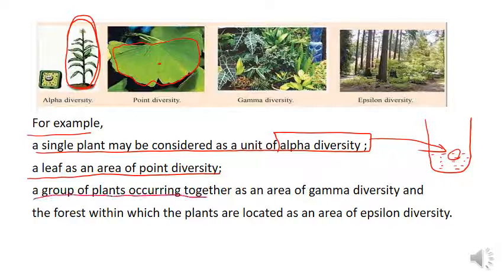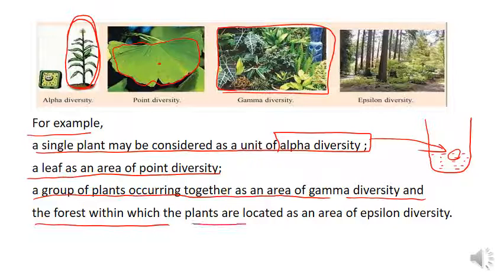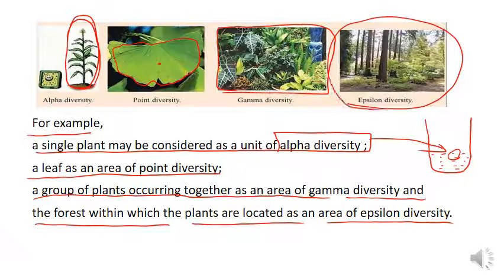Third: Gamma diversity — it represents the diversity of a larger unit such as an island or landscape. A group of plants occurring together represents an area of gamma diversity — जैसे a small village, a small area, a city, a state, or a country — वो gamma diversity है. Fourth: Epsilon diversity — also called regional diversity, includes the total diversity of a group of gamma diversity areas. The forest within which the plants are located is an area of epsilon diversity — बहुत बड़ा area, like a forest, that is epsilon diversity.